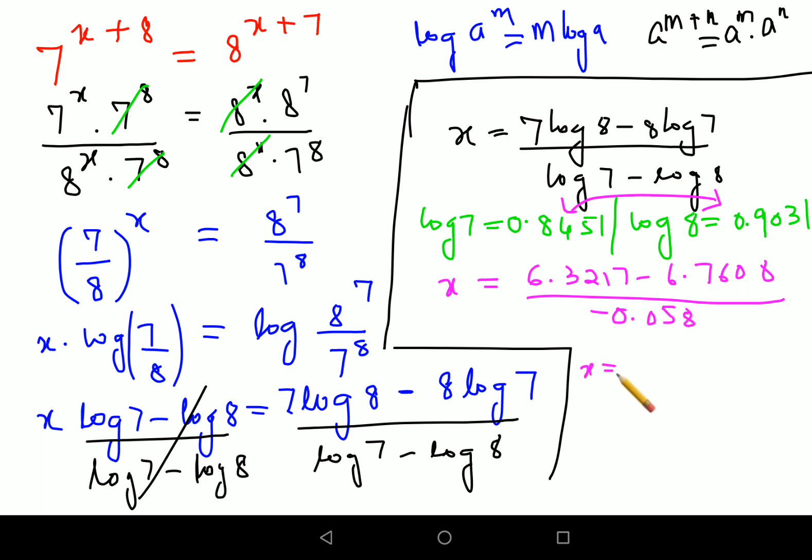So the value of x is now coming out to be minus 0.4391 upon minus 0.058. When you do the division, you get the value of x as 7.571.